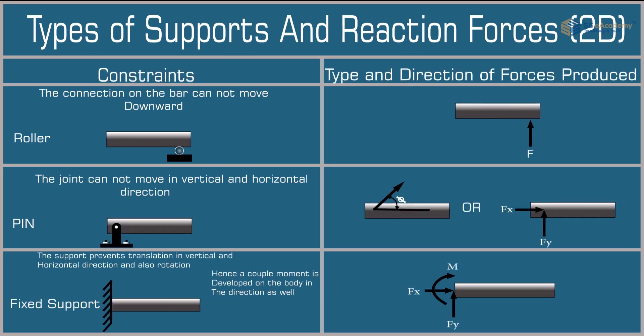The three basic types of support are fixed support, pin support, and roller support. A fixed support has horizontal reaction, vertical reaction, and moment — it prevents translation in vertical and horizontal directions and also prevents rotation, so a couple moment is developed. The pin support means the joint cannot move in vertical or horizontal direction, so reactions are Fx and Fy, with no moment. The roller support allows movement along the surface, providing only a vertical reaction.